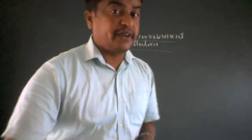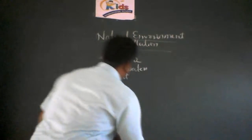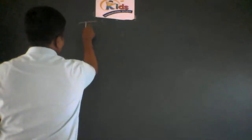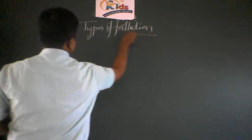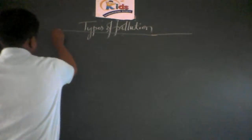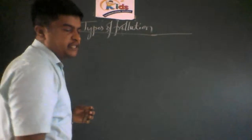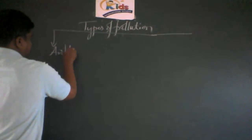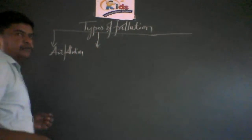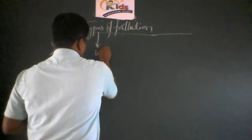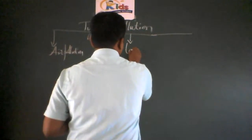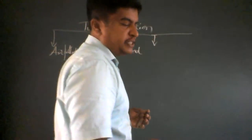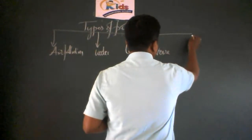We shall study about the different types of pollution. The types of pollution are: first, air pollution; second, water pollution; third, land pollution; fourth, noise pollution; and fifth, light pollution.